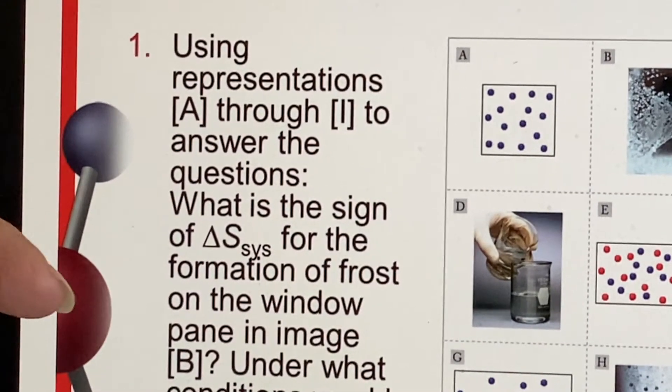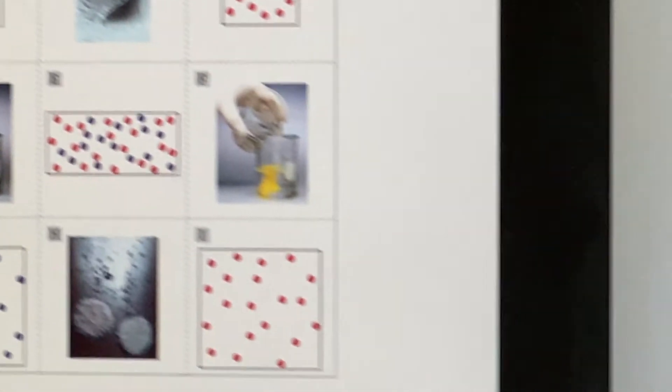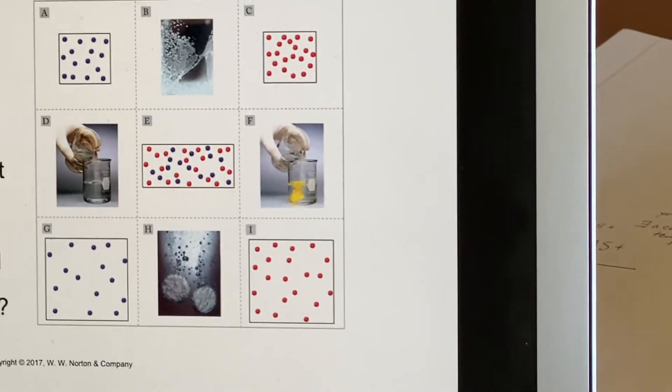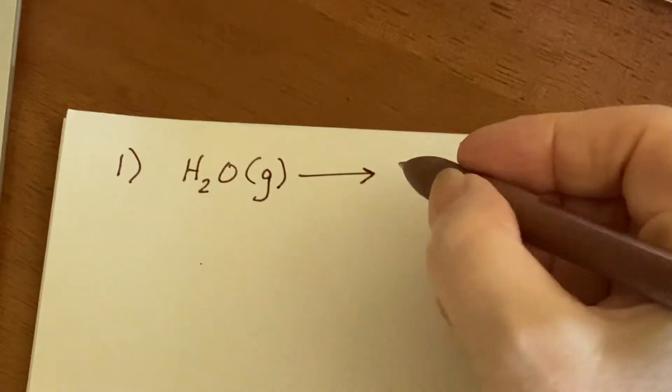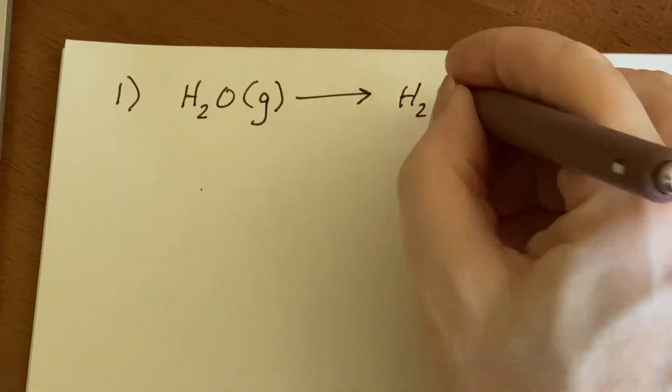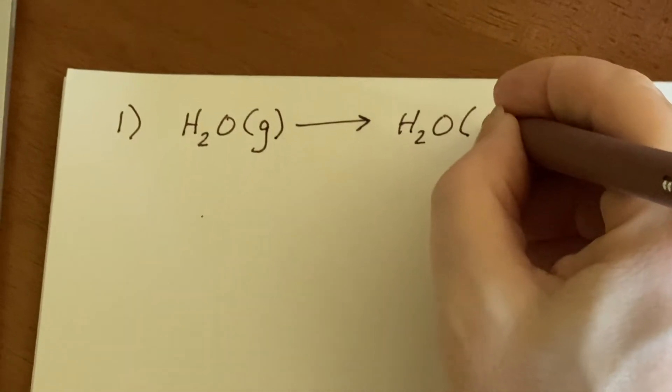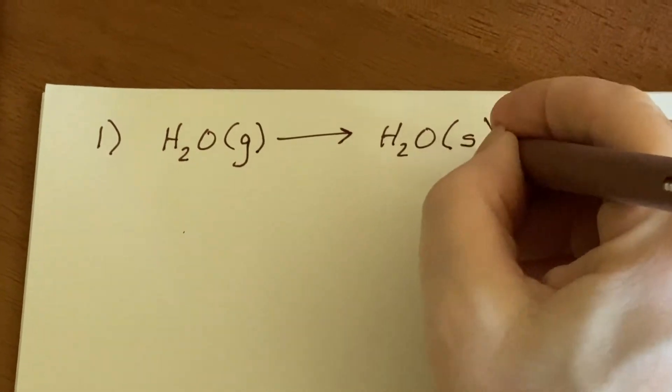It happens when it's really cold. There's a formula that would be applicable for the frost forming on the window. It's happening from the water vapor in the air, condensing and not only condensing but solidifying right on the window.